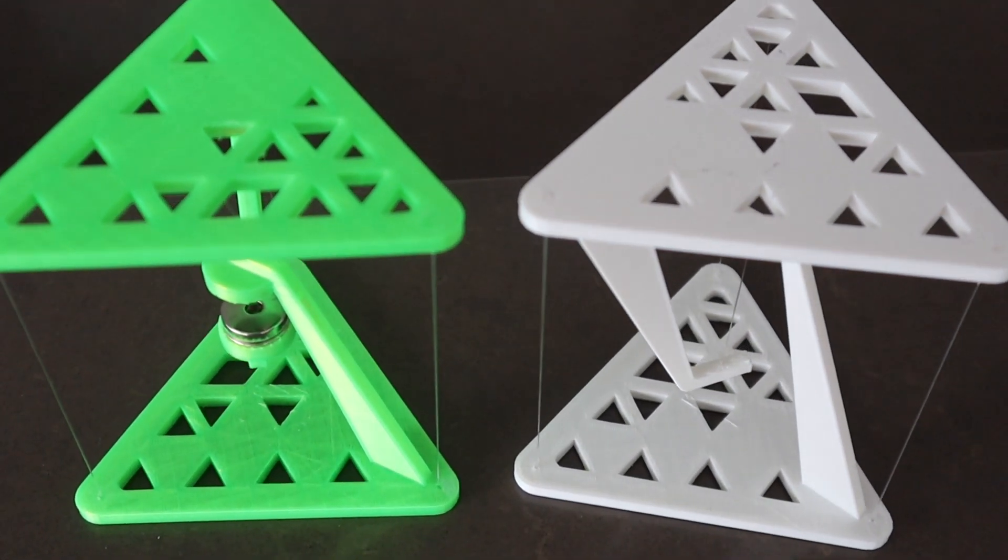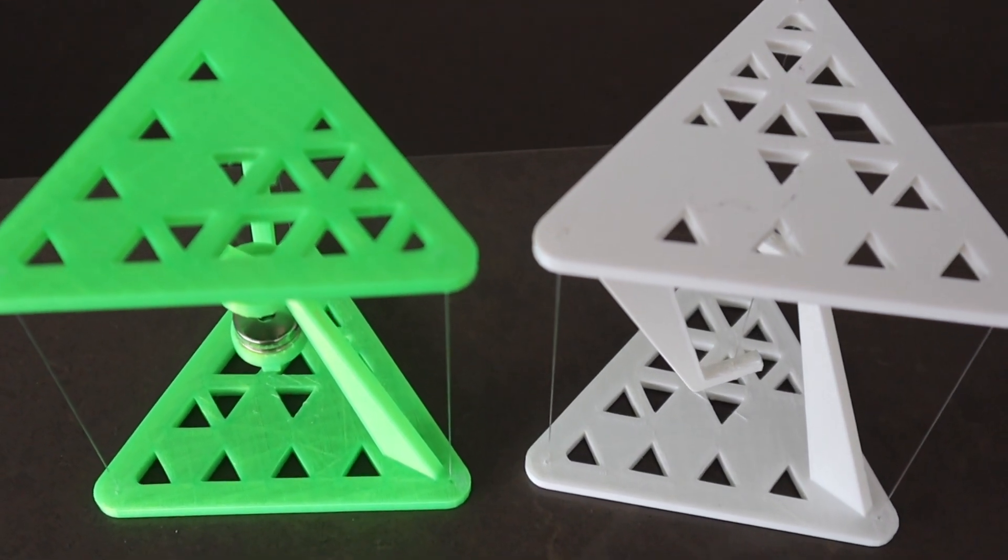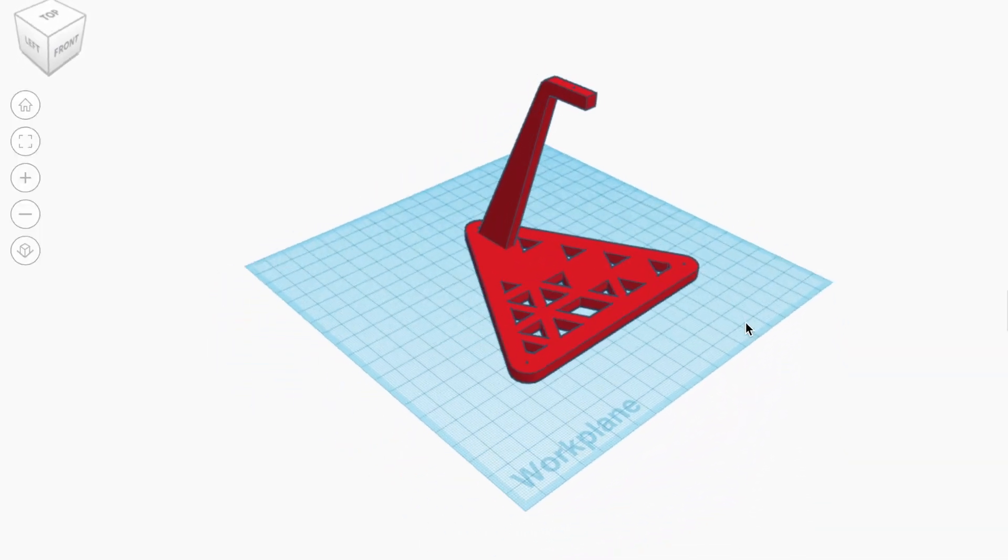If any of these four lines are cut the table will collapse under its own weight. Let's get into building the 3D printed tensegrity tables.